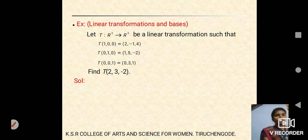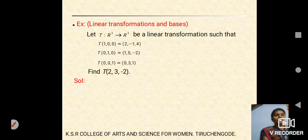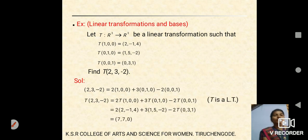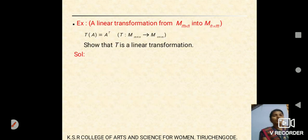Example for linear transformation and basis: consider T mapping from R³ to R³, given T(1,0,0), T(0,1,0), and T(0,0,1). Find T(2, 3, −2). Note that (2, 3, −2) = 2(1,0,0) + 3(0,1,0) − 2(0,0,1). Applying transformation T gives T(2, 3, −2) = 2T(1,0,0) + 3T(0,1,0) − 2T(0,0,1) = (7, 7, 0). Then T is a linear transformation.